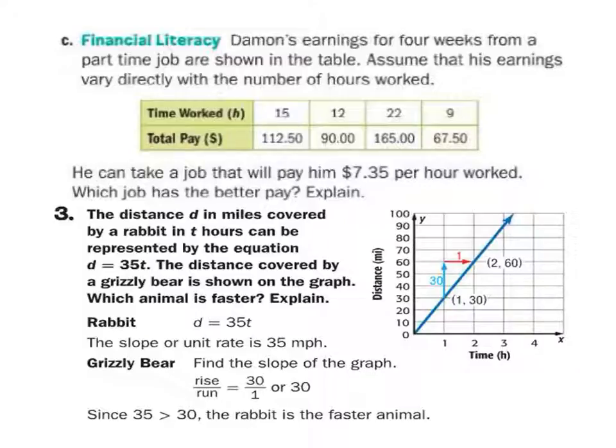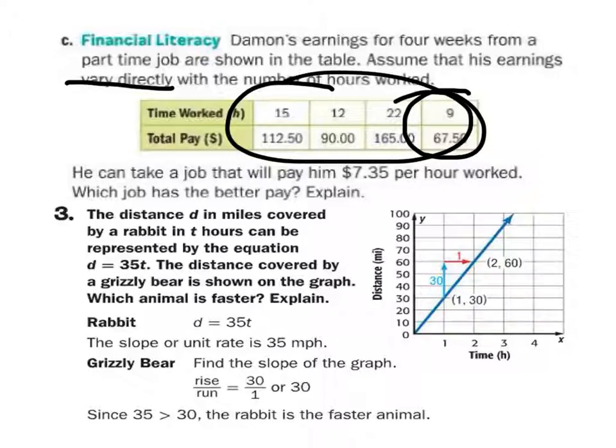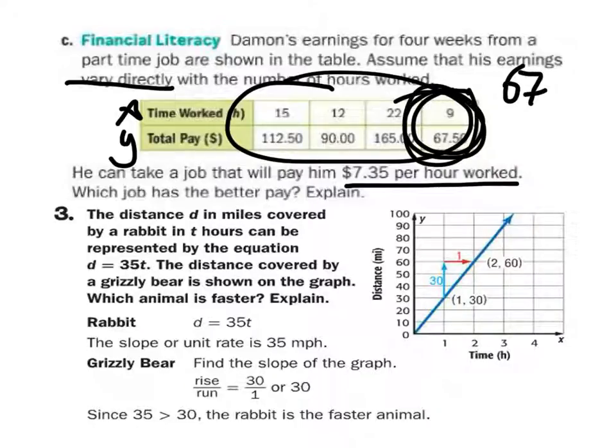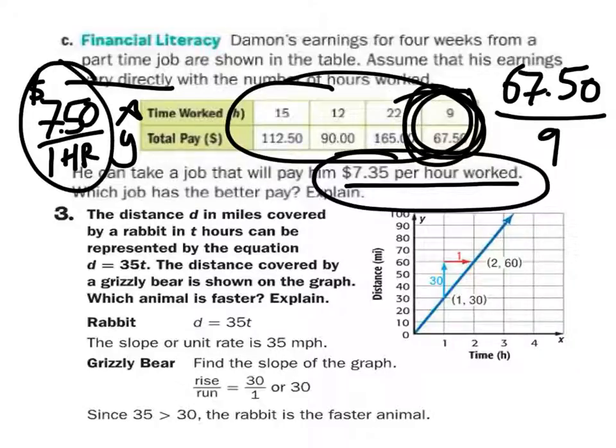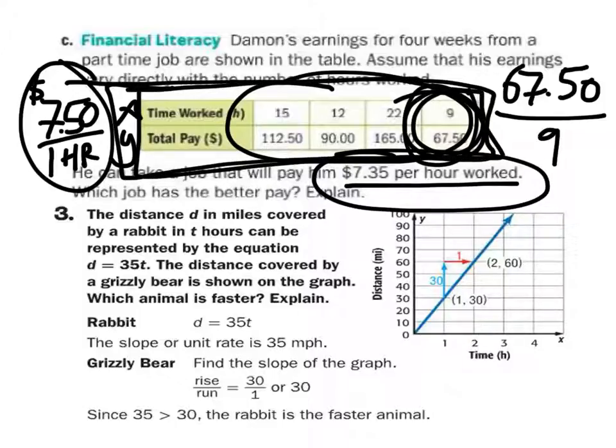Damon's earnings for four weeks from a part-time job are shown. Assume that they vary directly, so we don't need to figure out if it's a direct variation. What we've got to do is figure out what his rate of pay is through all of these numbers. It says that he could get a job that pays $7.35 per hour, but let's figure out the other one. So it's per hour, dollars per hour, so time, of course, is X. Pay is going to be Y. So all you're going to do is put one of these values in. I'm choosing this one. So $67.50 divided by 9. What does that equal? It equals $7.50. So it's $7.50 per one hour. Is this job going to pay more, or is this one going to pay more? The $7.50, which was from the table, and it told us that the table is from his current part-time job. So he would want to stay, or the first job pays better.